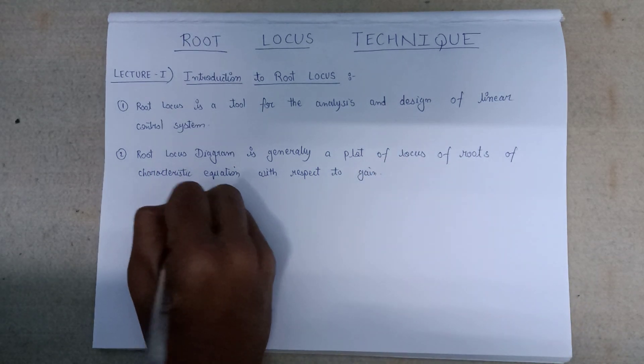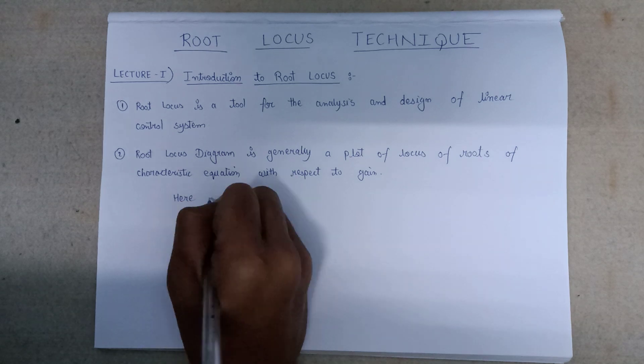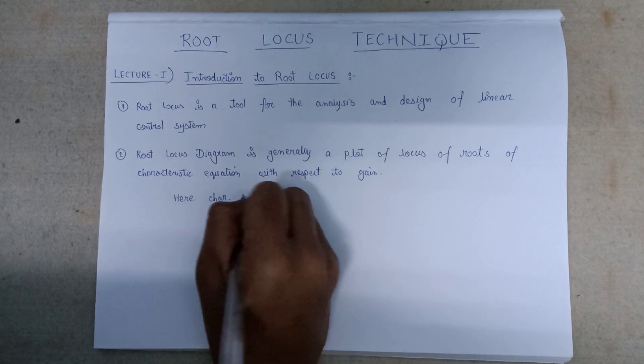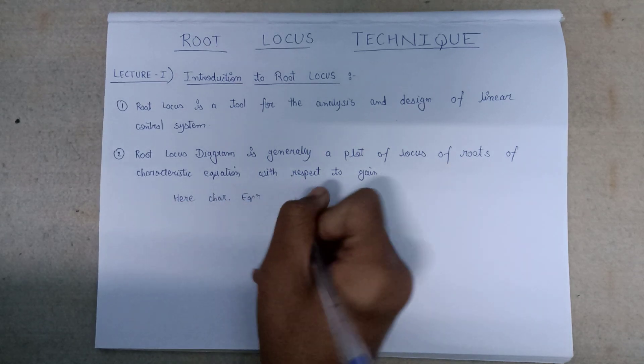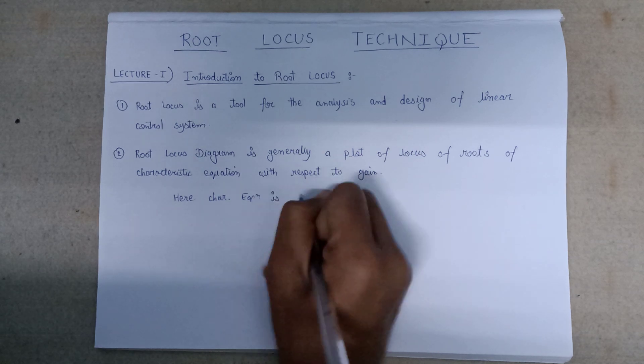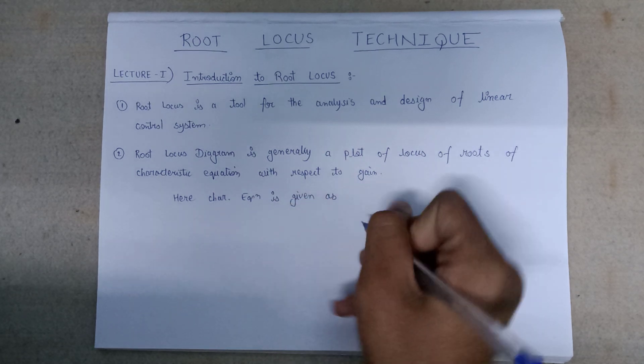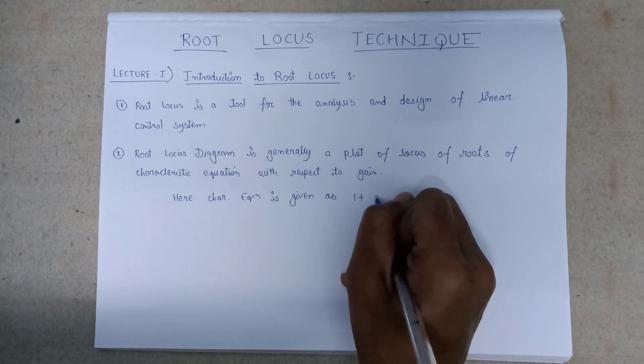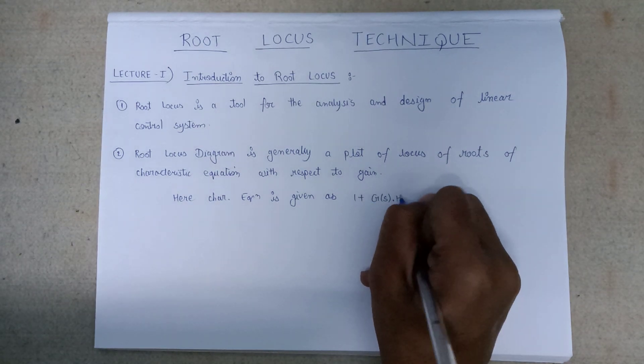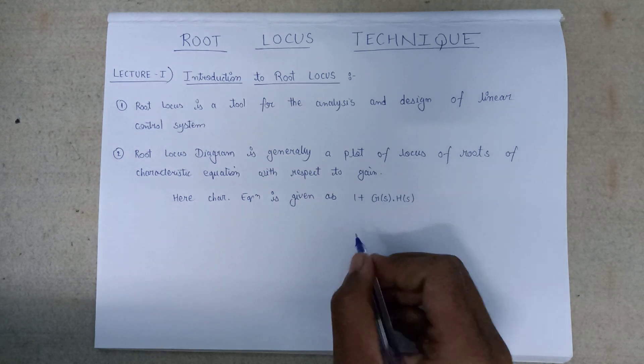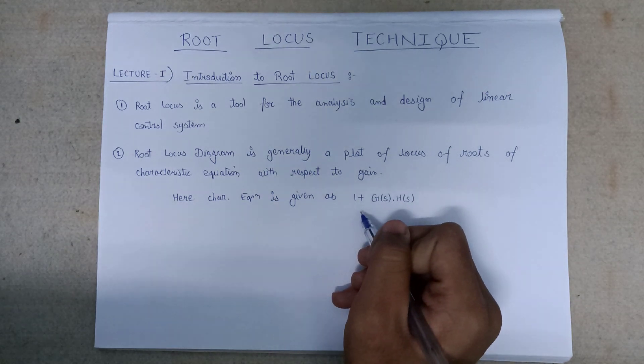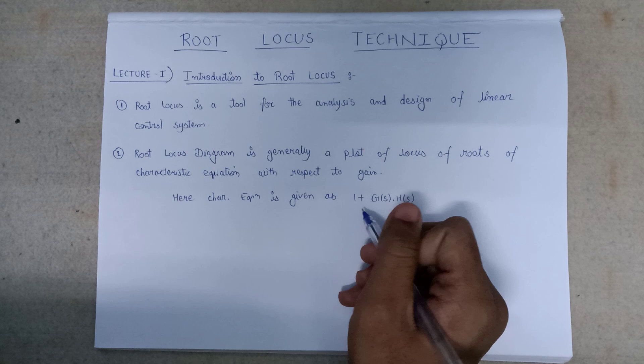Here the characteristic equation is given as 1 plus G(s) into H(s). This is the basic expression of characteristic equation we had discussed in the earlier videos, so please refer to those videos also.